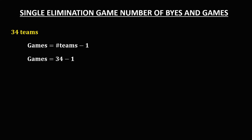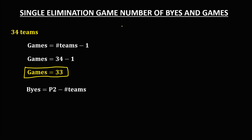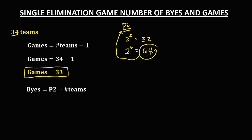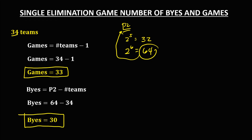For 34 teams, the total number of games is 34 minus 1, which equals 33. For the number of byes, 2 to the power of 5 is 32, but since 32 is less than 34, we use 2 to the power of 6, which is 64. So the total number of byes is 64 minus 34, equal to 30. For the diagram, since there are 34 teams, that's 17 for the upper half and 17 for the lower half, with 15 byes for the upper half and 15 for the lower half. This is how to find the number of byes and the number of games for a single elimination tournament.